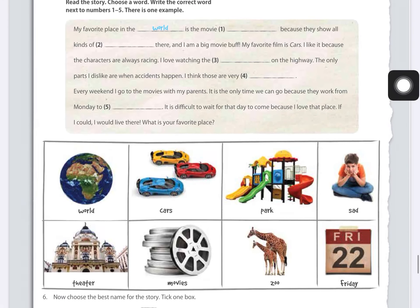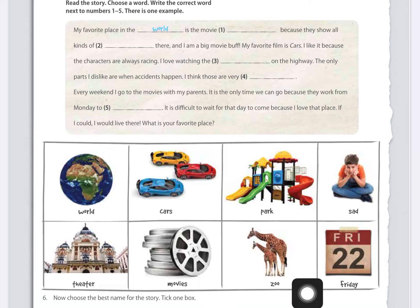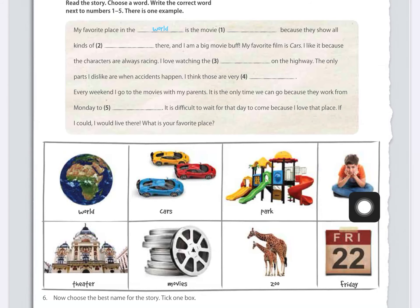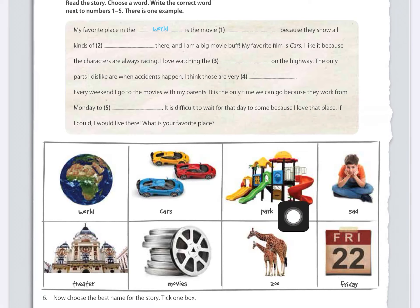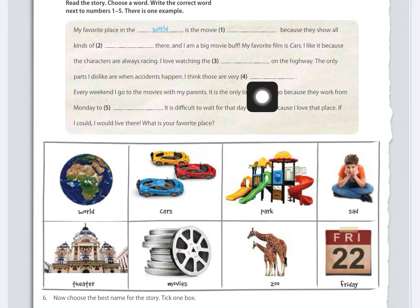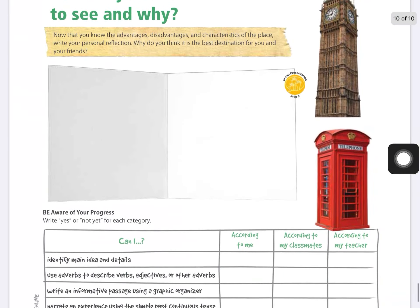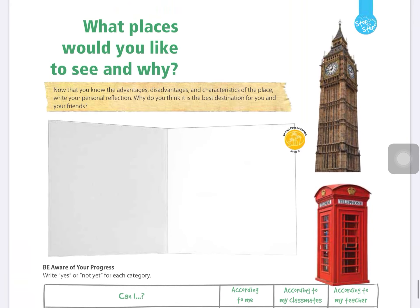The word choices provided are: war, cars, park, shots, theater, movies, zoo, and Friday. Connect the word or object you think best completes each sentence. Complete the box with the appropriate word — for example, if you think number one is 'park,' write 'park' there. But please read the paragraph first.